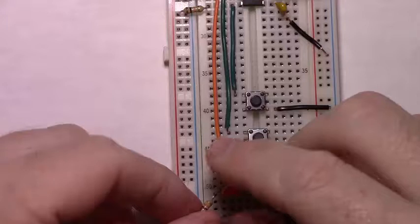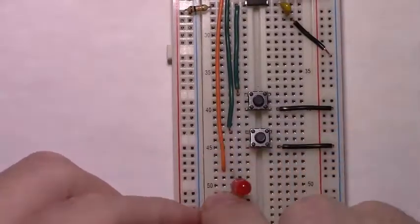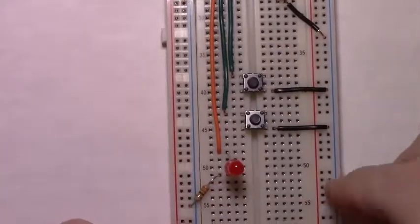We just connect our 330 ohm resistor to the cathode of our LED, and the other end of the resistor to ground.